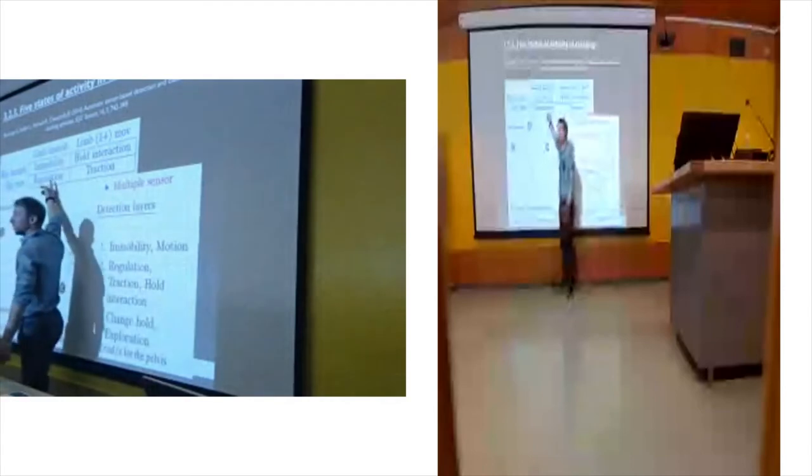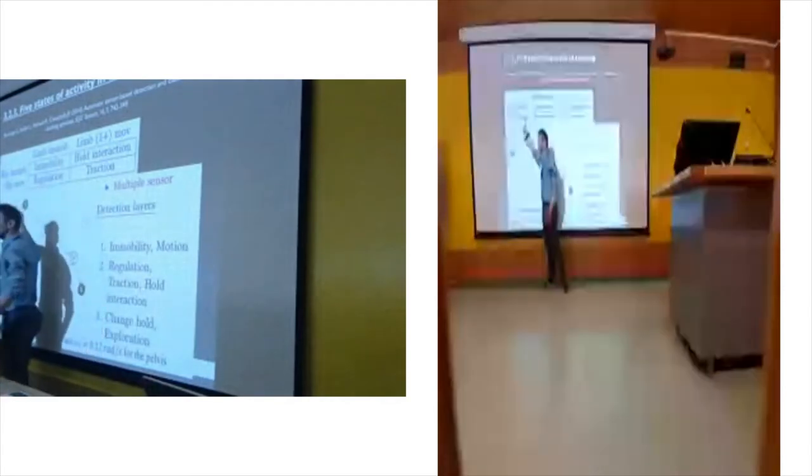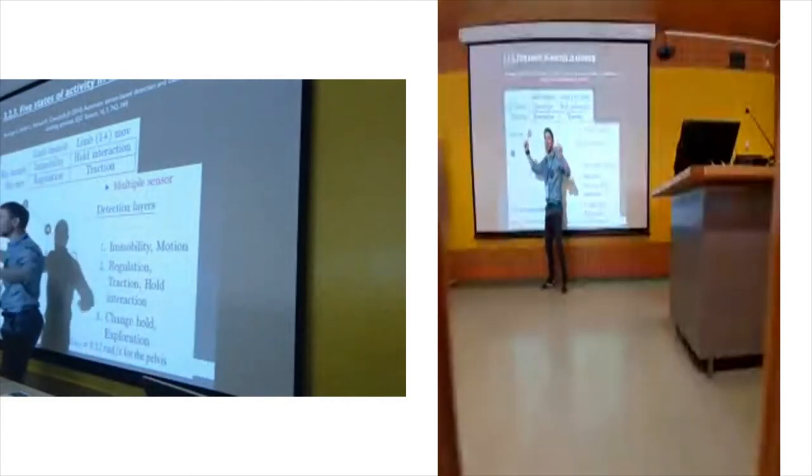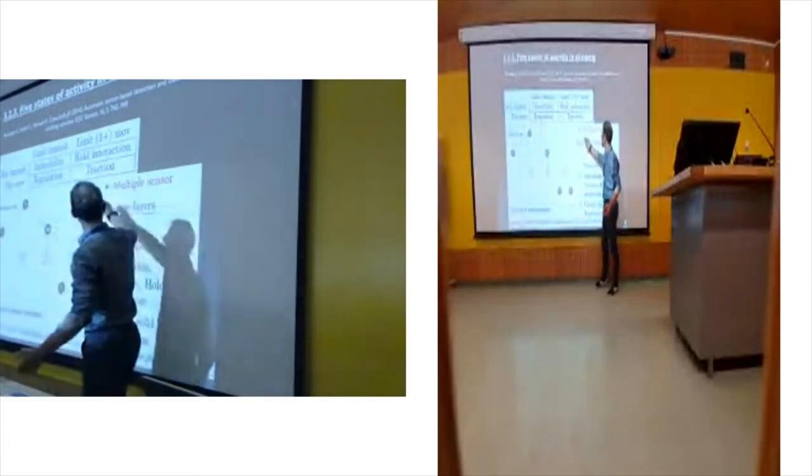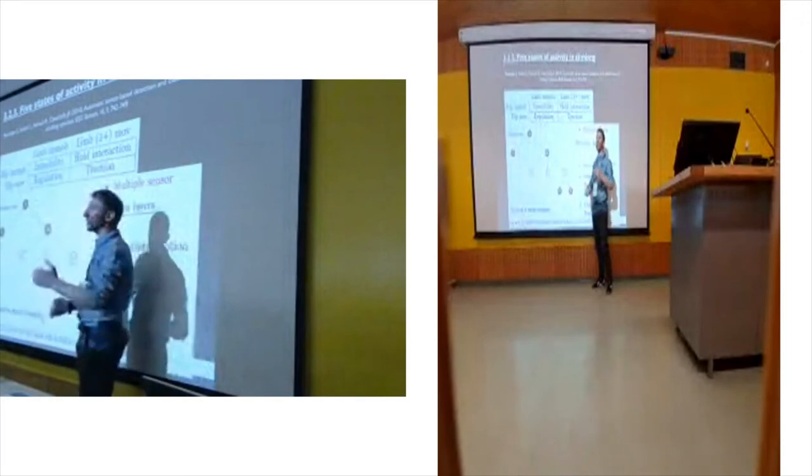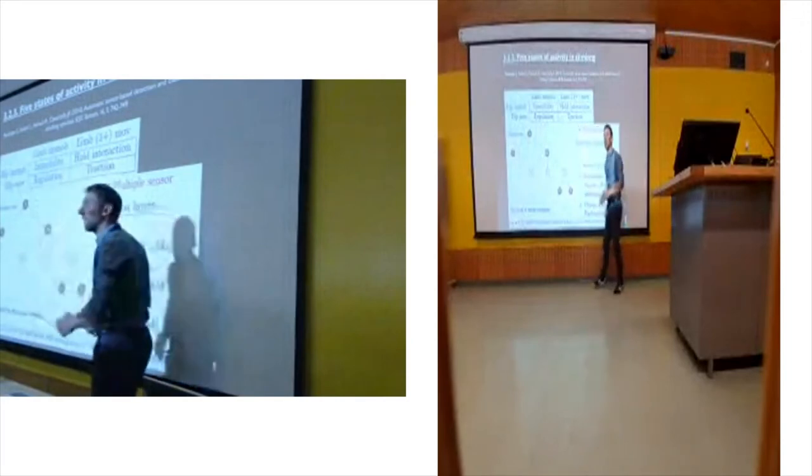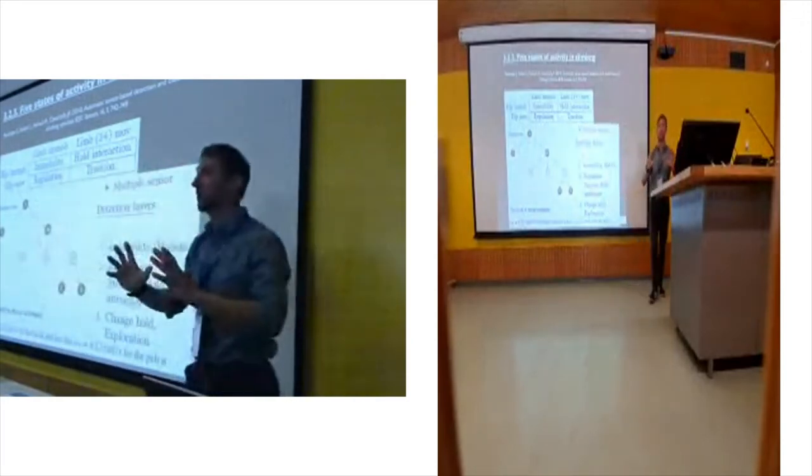When both are immobile, we call this immobility. When the limbs are moving and the hip is immobile, we call that hold interaction, like doing that. When the limbs are immobile and the hip is moving, like this, like dancing, we call that postural regulation. And finally, when everything is moving, we call that translation, when we go there.